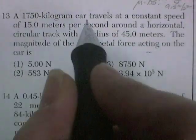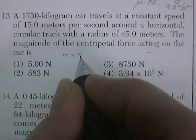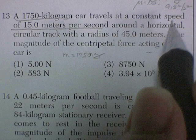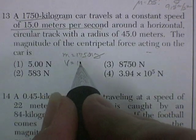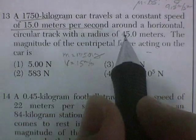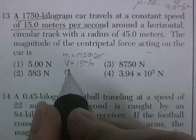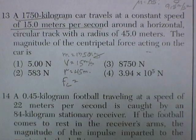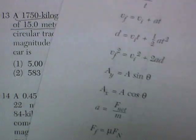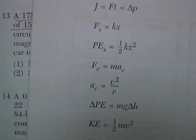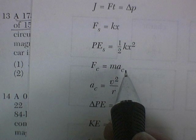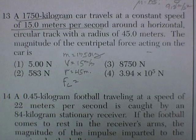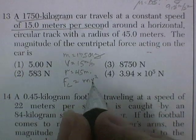Question 13. A 1750 kilogram car — mass is 1750 kilograms — traveling at a constant speed of 15 meters per second; constant speed because he's changing direction. This is tangential velocity. He's going around a horizontal circular track with a radius of 45 meters. The magnitude of the centripetal force. So I go to the formula sheet and find: force centripetal is equal to mass times centripetal acceleration, and centripetal acceleration is V squared over R. Combining the two: force centripetal equals M V squared over R.